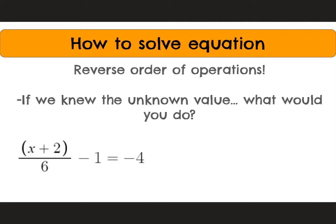So we go backwards. What was the last thing we would have done? Well, it was subtract 1. So let's do the opposite of that by adding 1 to both sides. Now we end up with (x + 2) over 6 is equal to negative 3. Now what was the second to last thing we would have done? We would have divided by 6. So now we undo that by multiplying both sides by 6. This gives us x plus 2 is equal to negative 18.